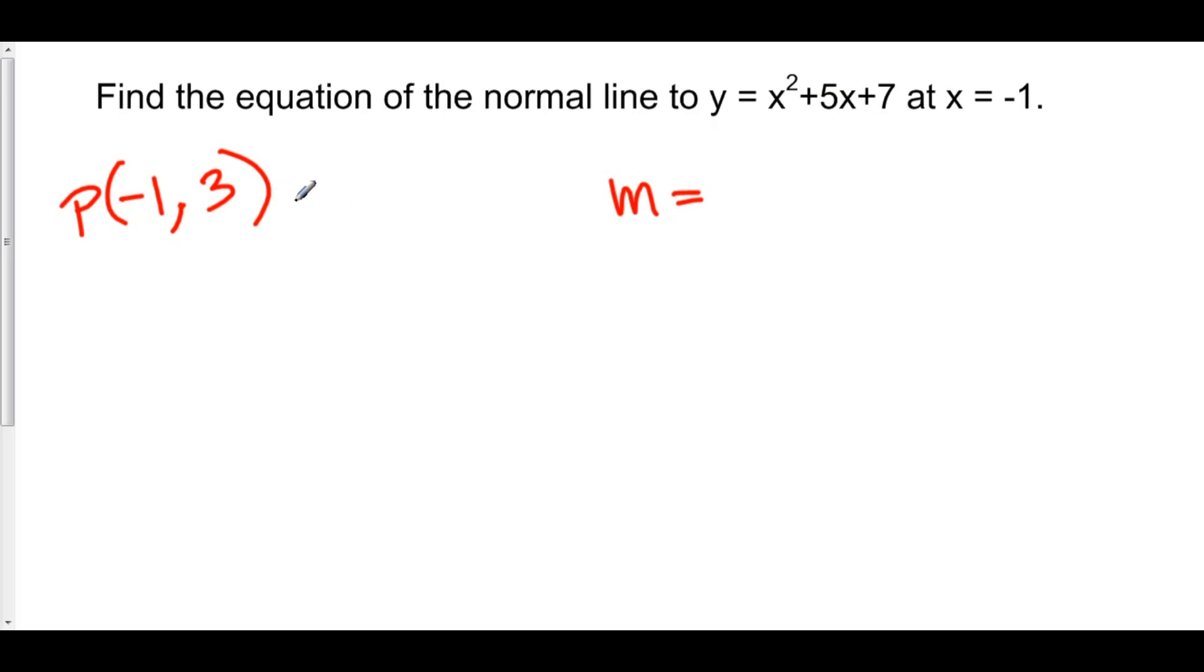We've got our point. Now we have to find the slope. The slope of a normal line is the negative reciprocal of the slope of the tangent line. Of course, the slope of a tangent line is just the derivative at x = -1.